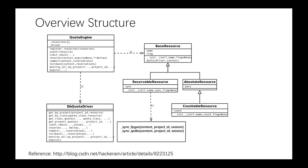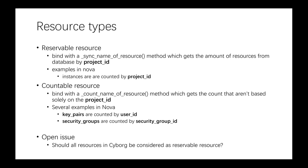In the original implementation it is divided into two kinds of resources. The first one, reservable resource — we shall retrieve the whole amount of resource from the database by project ID. For countable resource, we cannot get the amount of the resource only by project ID. Like in Nova, we have key pairs which can be retrieved by user ID, and security group which can be retrieved by security group ID.